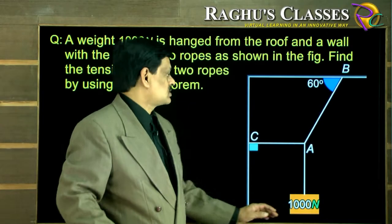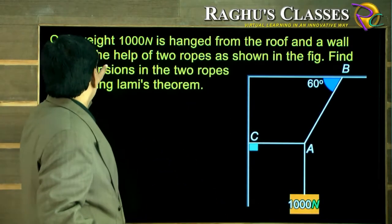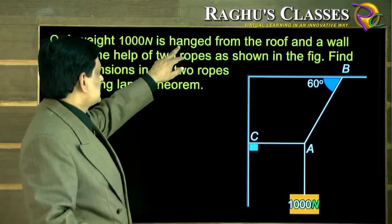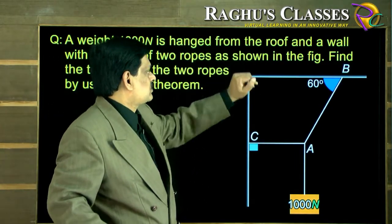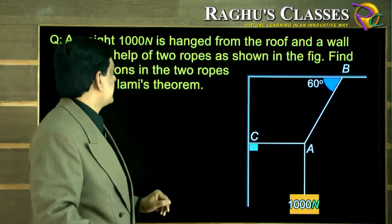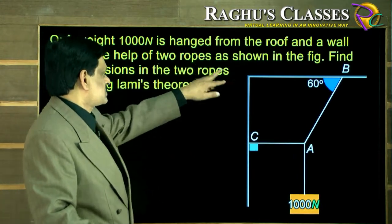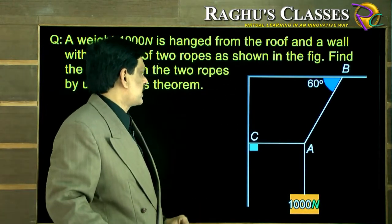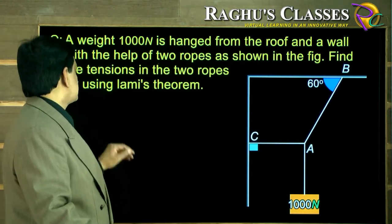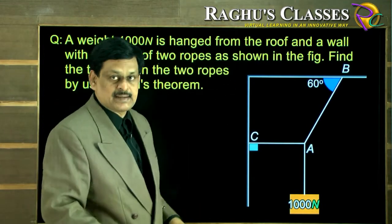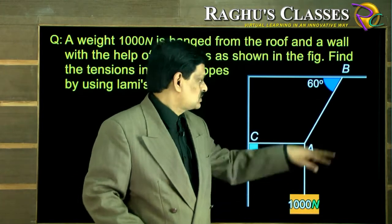Now look at this question here. A weight of 1000 Newtons is hanged from the roof and wall with the help of two ropes as shown in the figure. Find the tensions in the two ropes using Lambert's theorem.